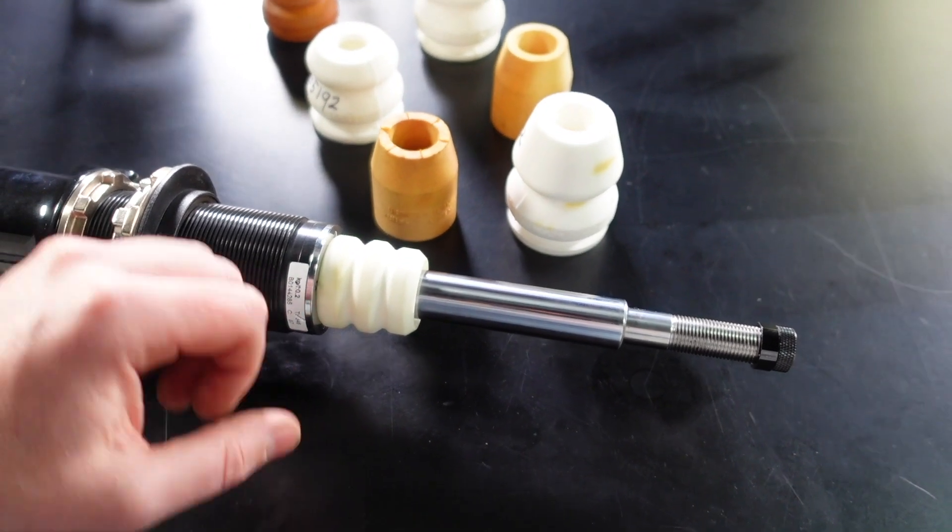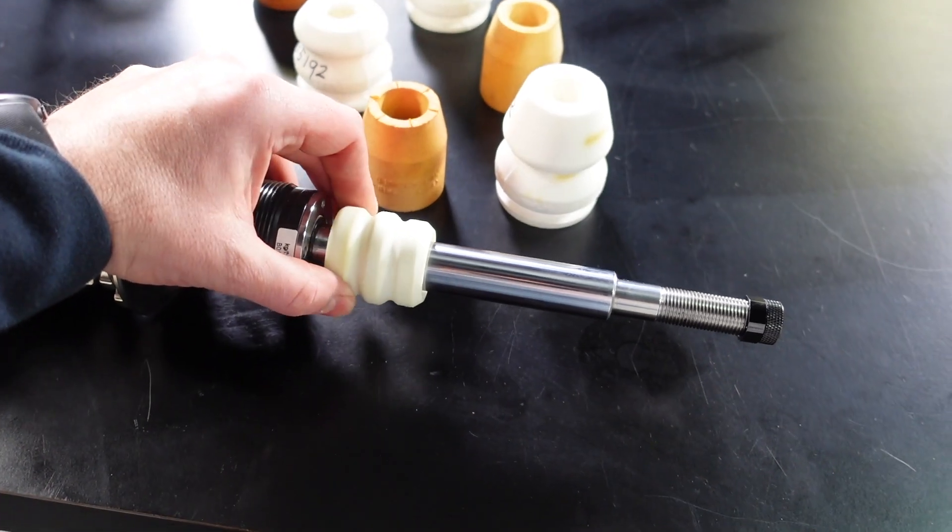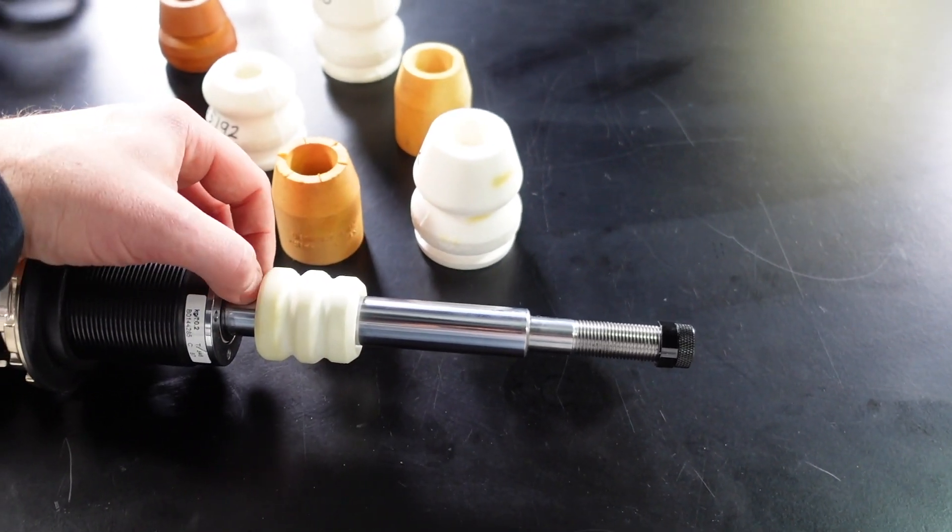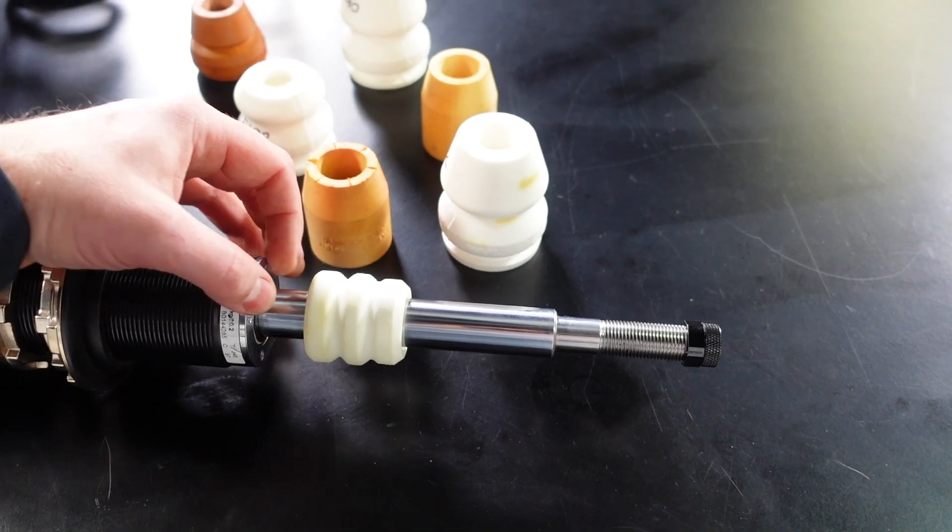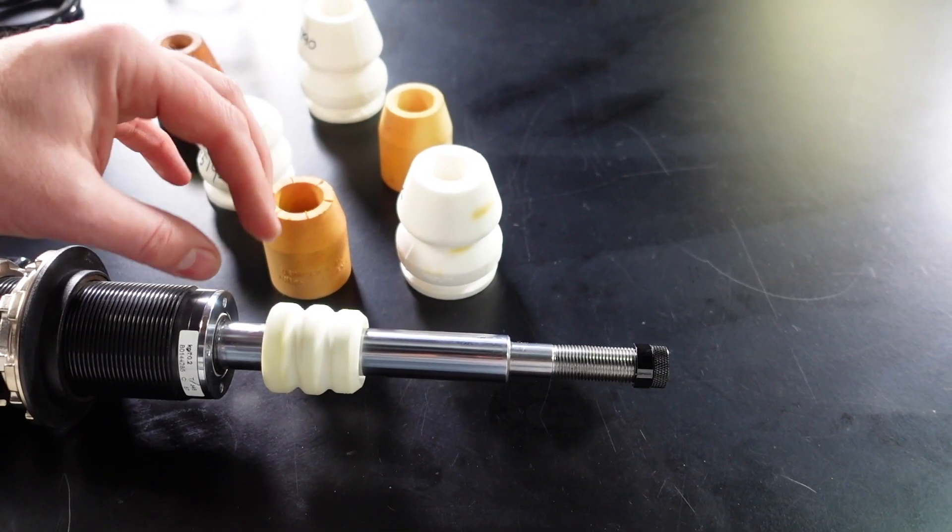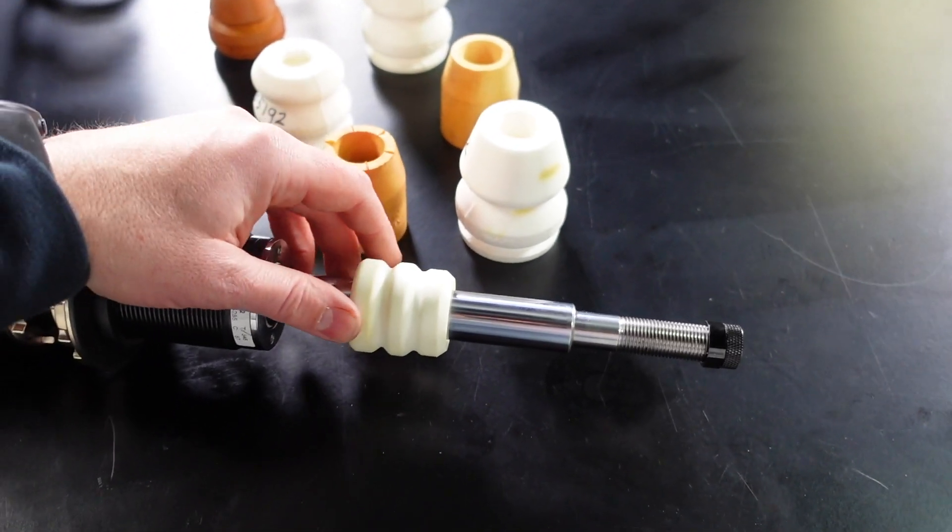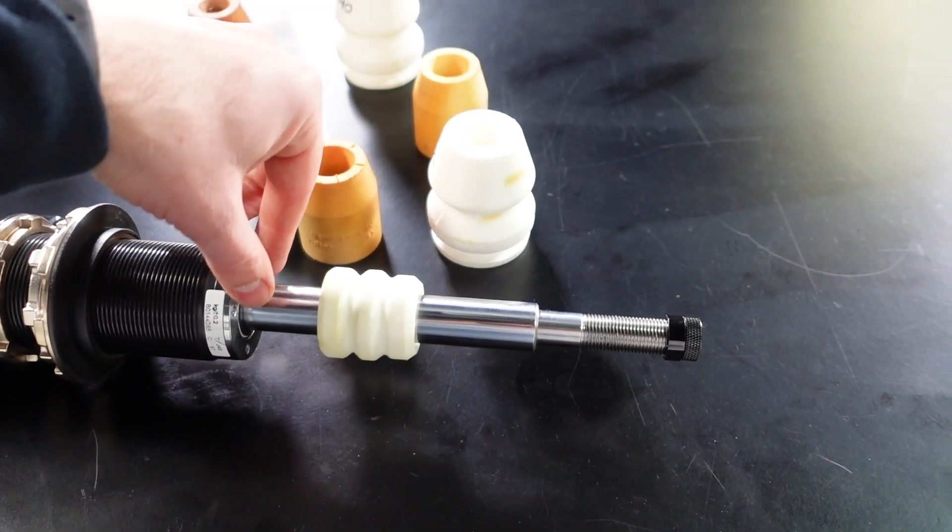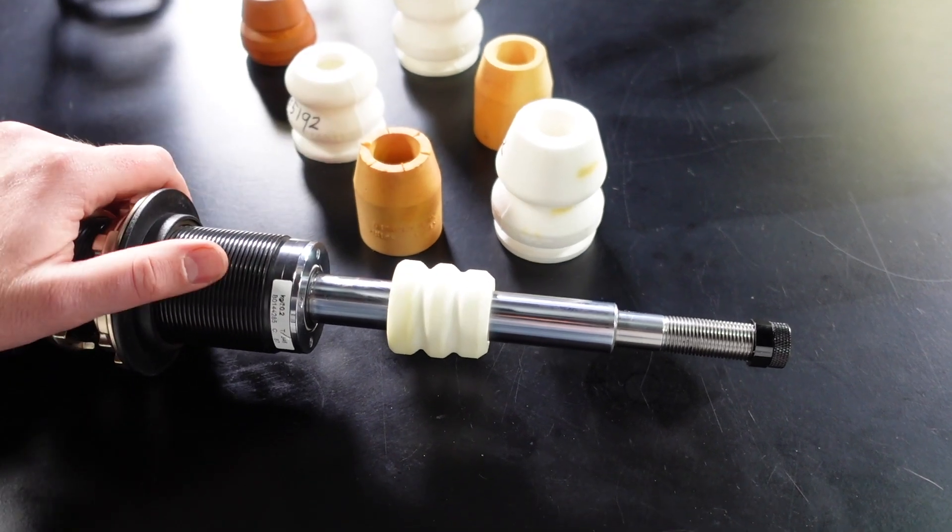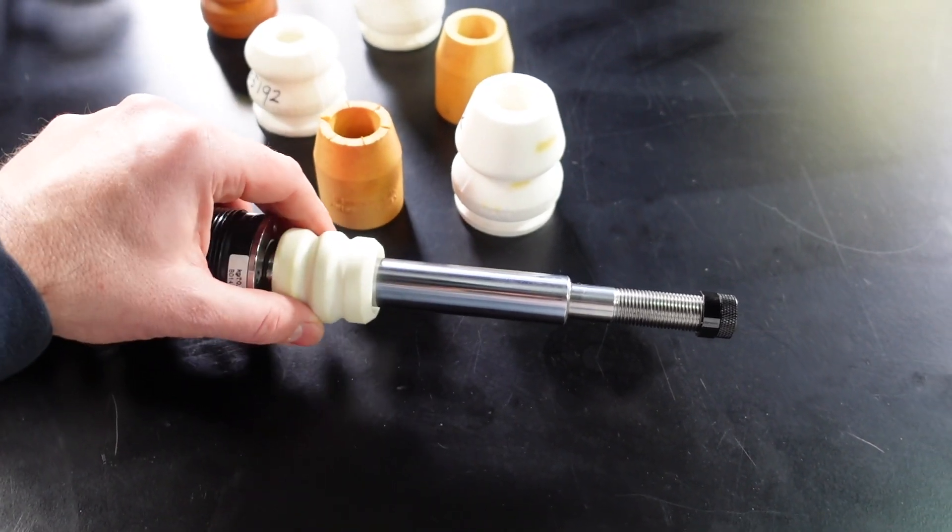The reason they often use the word packer gap is because to tune the position of the bump stop or to tune that height, you often insert packers underneath the bump stop. So you'll have packers at different increment sizes, say 1, 2, 3, 5 millimeters and such that you can slide over the damper shaft with the whole suspension already assembled to modify that bump stop gap.